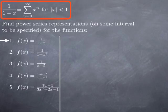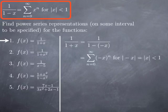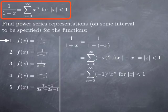If I have 1 over 1 plus x, all I need to do is write this as 1 over 1 minus something, which will be my common ratio. Specifically, I can write it as 1 over 1 minus negative x. Then for absolute value of negative x less than 1, I have the sum of the geometric series of first term 1 and common ratio negative x, so the series from 0 to infinity of negative x to the n. Absolute value of negative x is the same as absolute value of x, and negative x to the n is negative 1 to the n times x to the n, giving a power series centered at 0. The representation for 1 over 1 plus x is valid on the open interval negative 1 to 1.